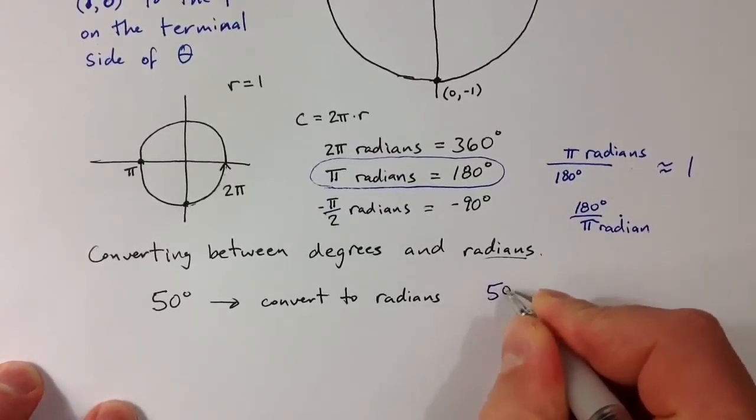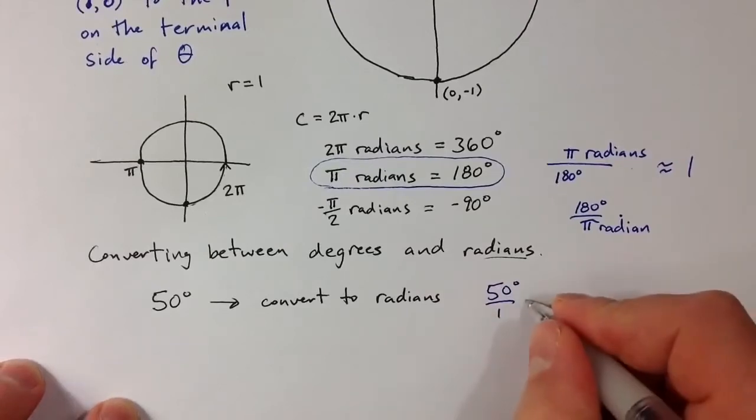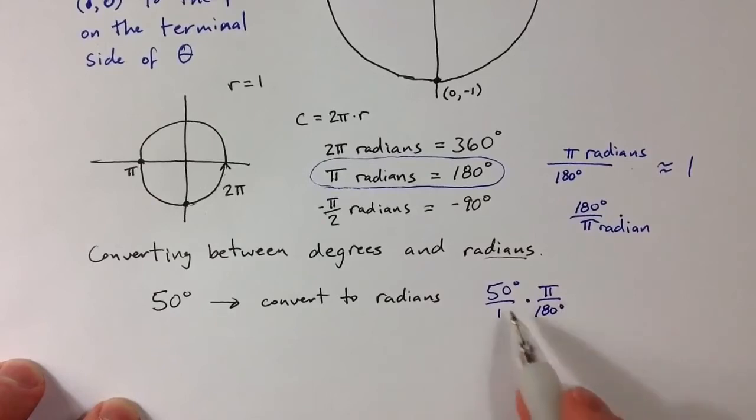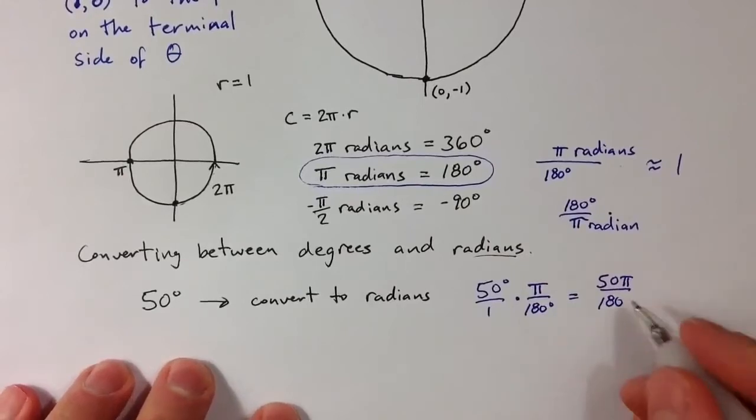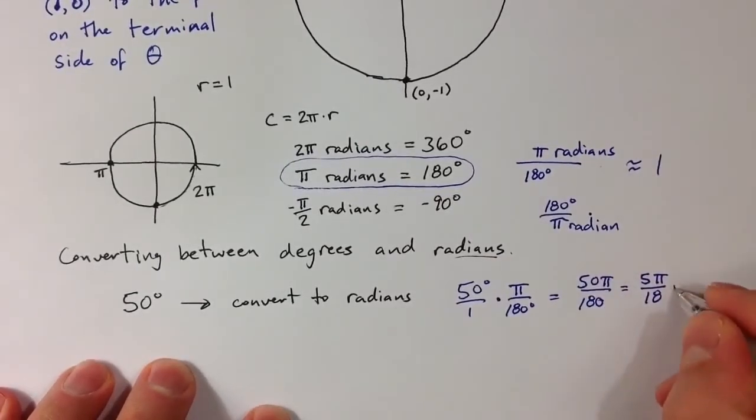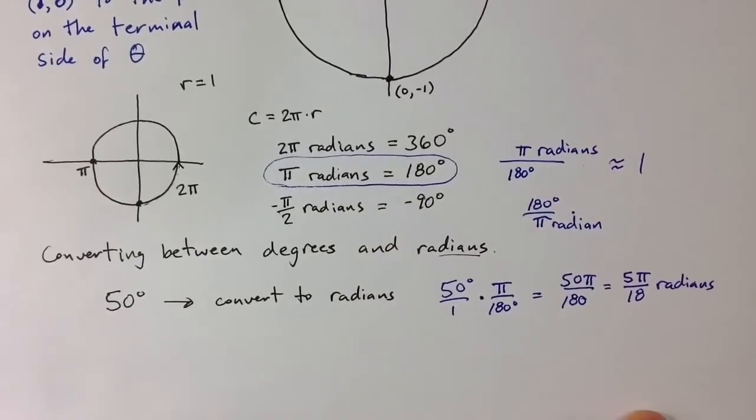If I start with 50 degrees, if I multiply by π over 180, the degrees essentially cancel, and we get 50π over 180. Or simplifying that, the factor of 10 can cancel from the top and the bottom, and that's the same as 5π over 18.